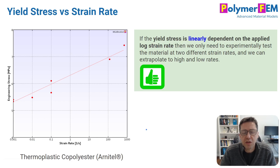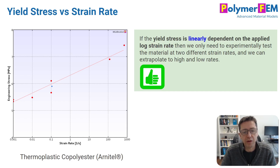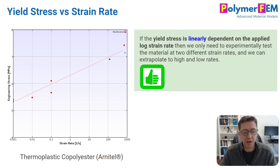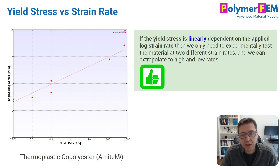This is really useful because it means I can measure the stress-strain response at just two different strain rates and not only interpolate between them — I can extrapolate outside that range up to very high strain rates, even up to 1000 per second, without doing any additional experiments. This saves time and money.